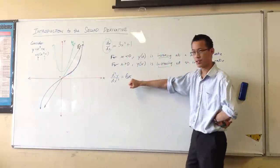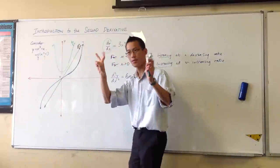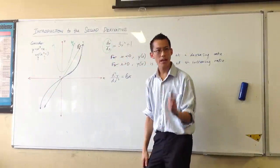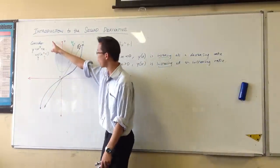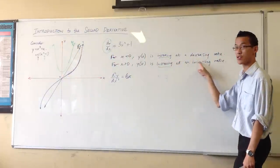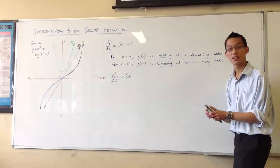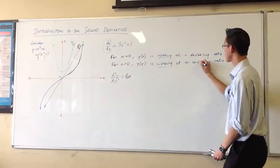Have a look at 6x. Have a look for x is less than 0. This second derivative is negative. What that corresponds to is, the first derivative is decreasing. You see that? Increasing at a decreasing rate. So what this is saying is, I'll put this back.